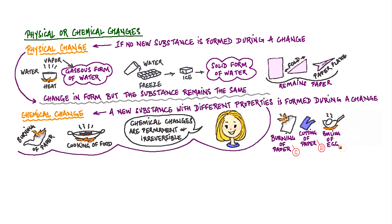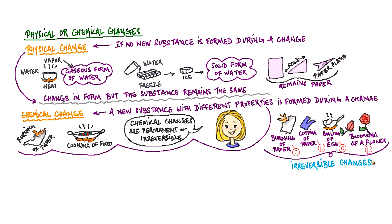Boiling of an egg is a chemical change where the entire composition of the egg changes as we boil or cook it. It is again irreversible, as the cooked form of egg cannot be turned back into the raw form. Blooming of flowers is a physical change where the bud, tightly packed with petals, blooms into a flower, so no new substance is formed. It is however irreversible, as the bloomed flower cannot be turned back into a bud.